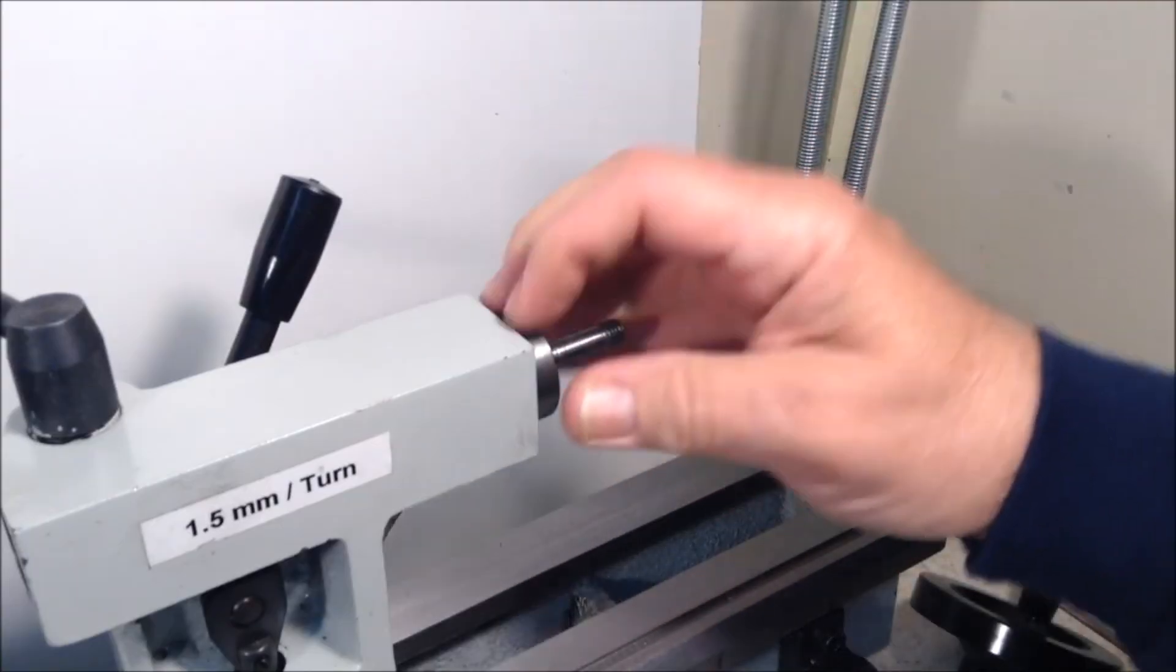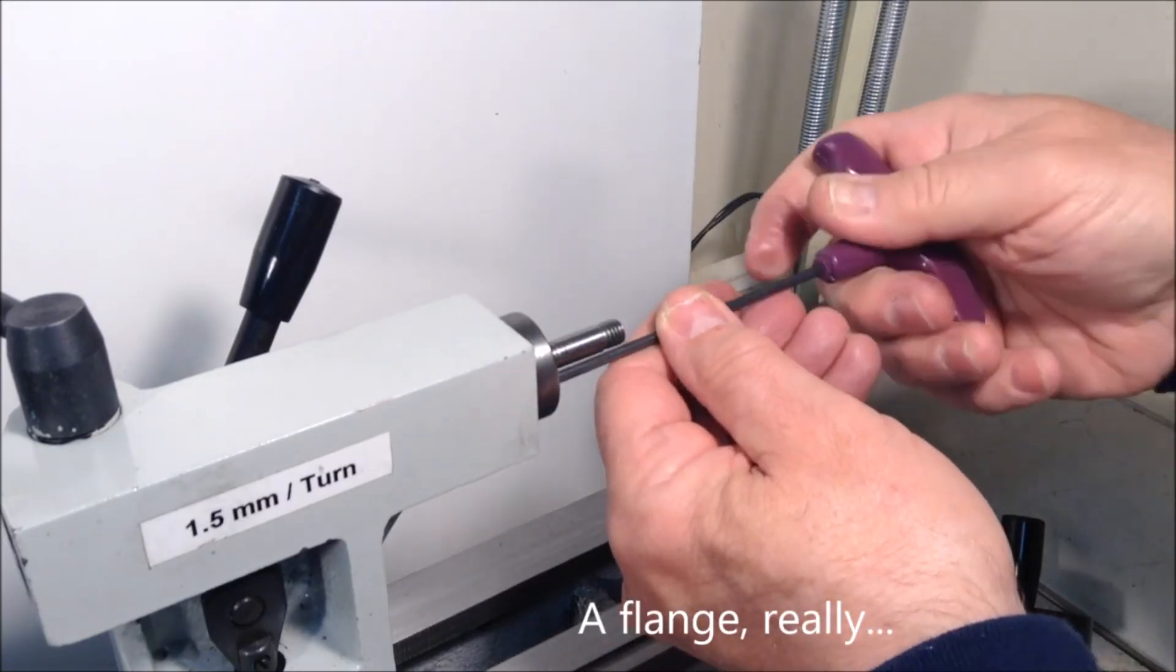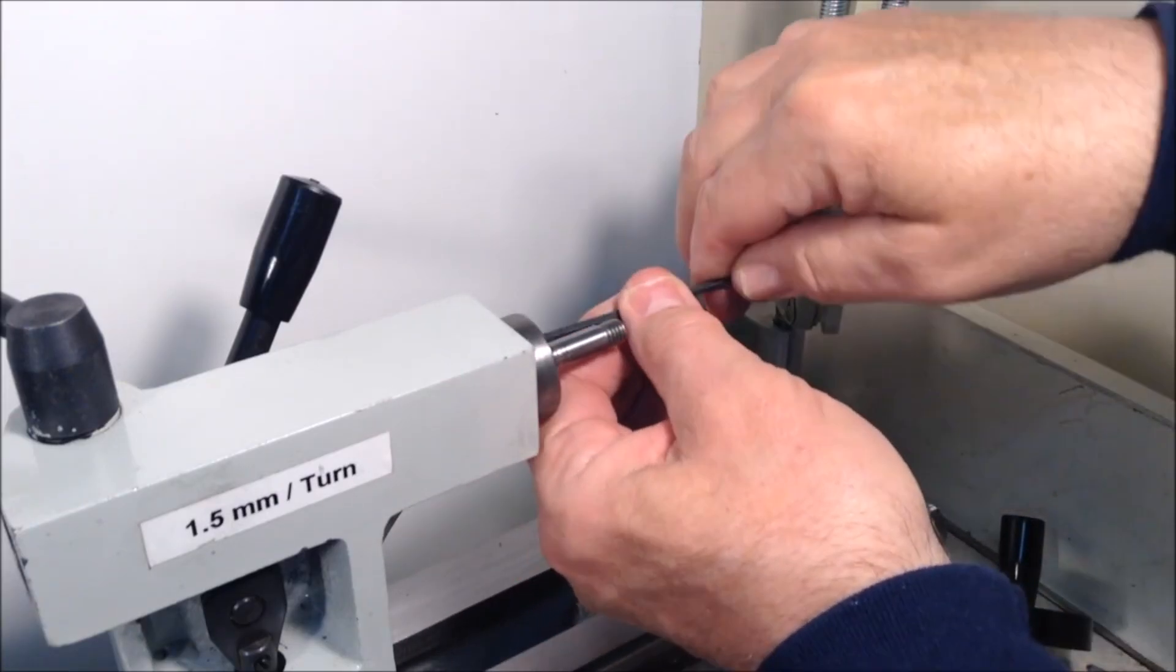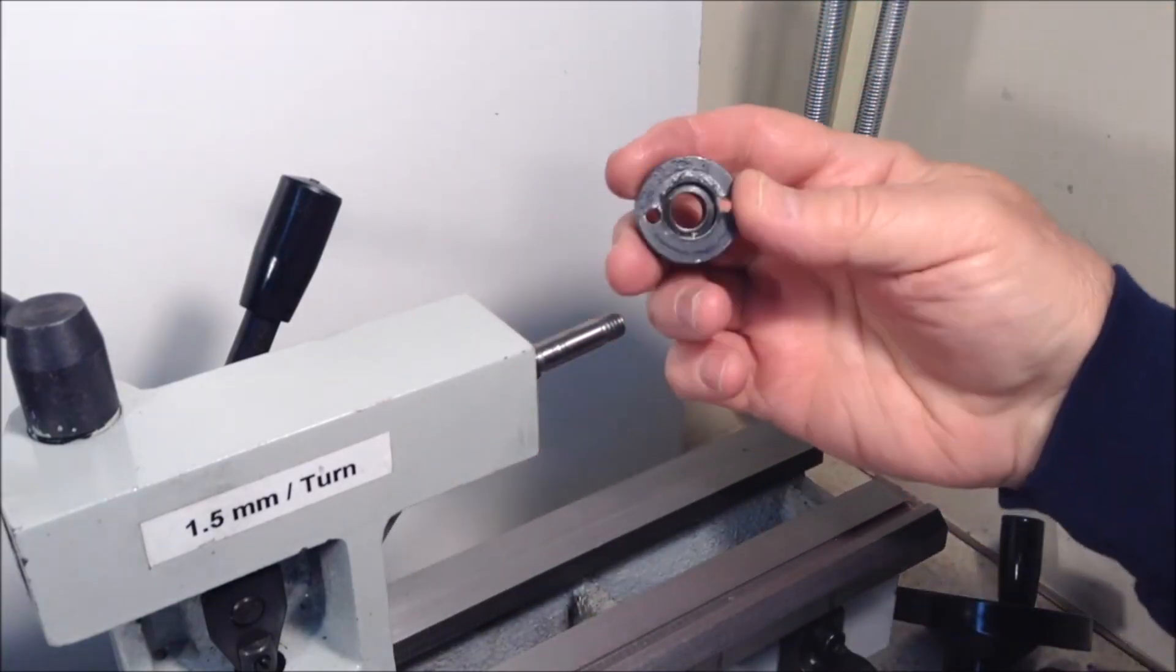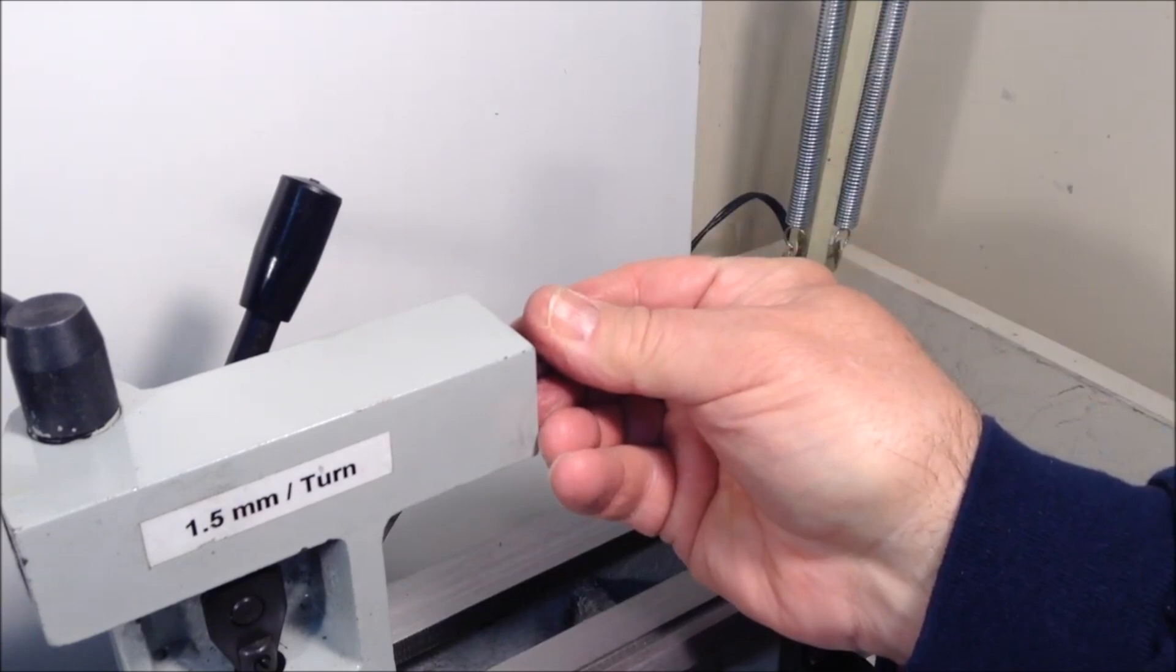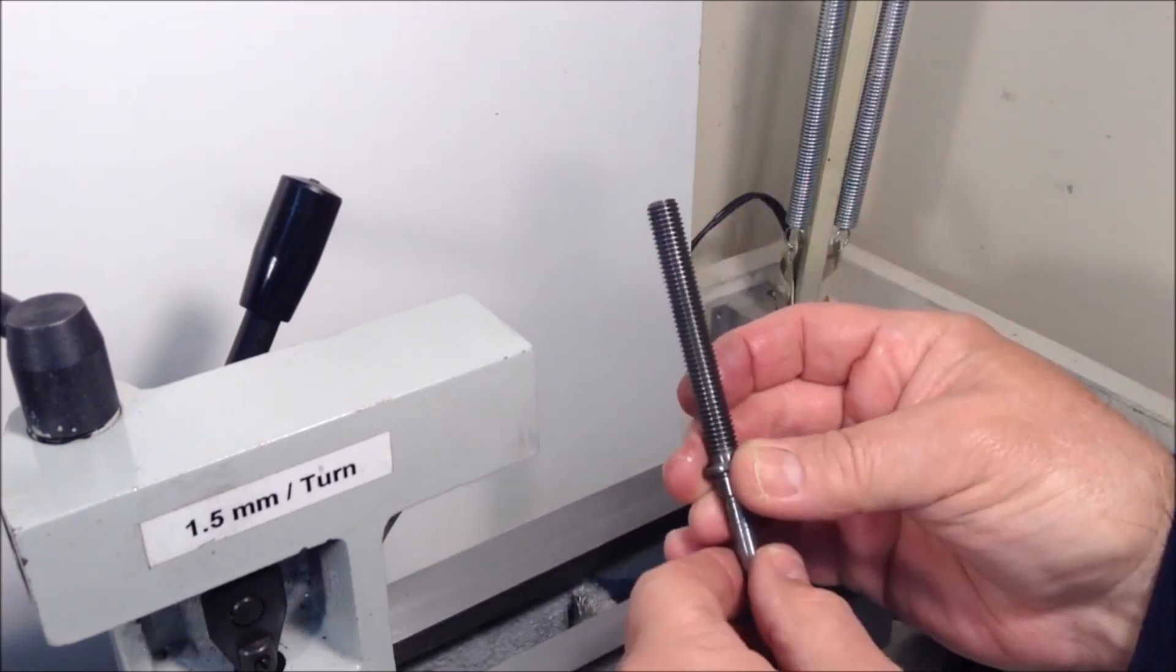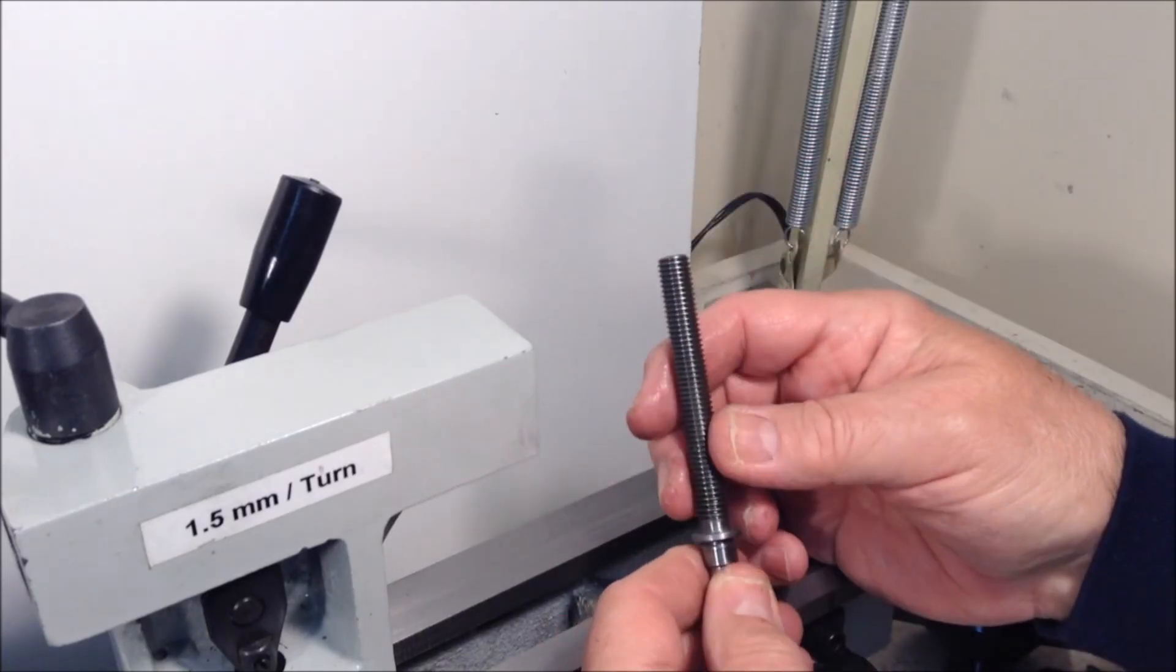Now with that removed, we can get access to this bushing back here, which is the next thing we'll remove. I'm going to use this 3 millimeter T-handle wrench. There's two socket head cap screws that need to be removed. Then we can remove this collar or bushing. Now that that's out, we can draw the lead screw out. You want to be gentle and careful doing this so you don't bang up the threads. Set this aside on a rag somewhere where it won't get dropped on the floor. You don't want to damage these threads because at some point you may want to use this for some purpose.